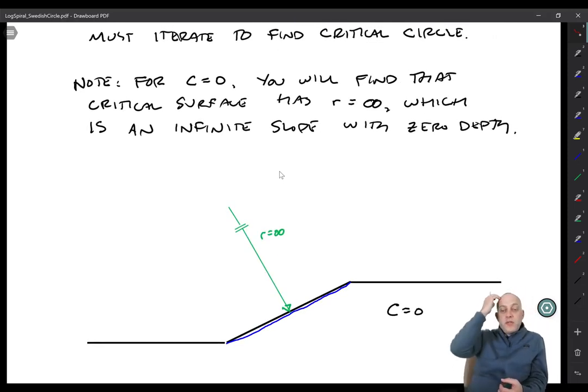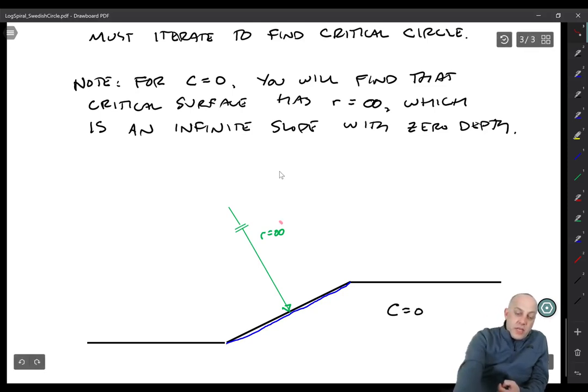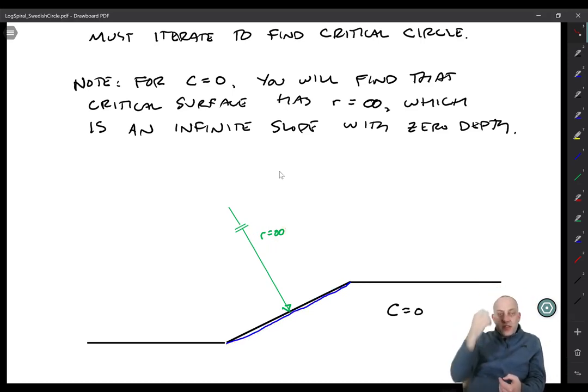If c is equal to zero, you shouldn't use the Swedish circle or log spiral methods. If you did, what you would find is that as you increase the radius of the circle, the factor of safety drops. So every time you make the radius a little bit bigger, the factor of safety will get a little bit lower.